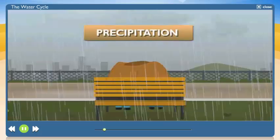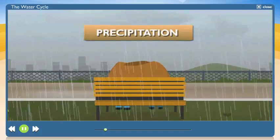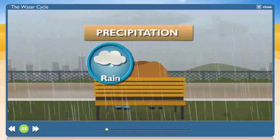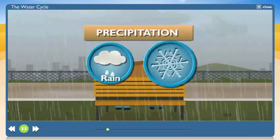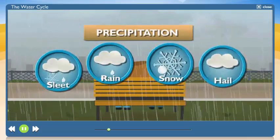Precipi-what? Precipitation. It's another word for rain. Actually, for any form of water that falls from the sky. You mean like snow, sleet, or hail? Yup. Those are precipitation, too.